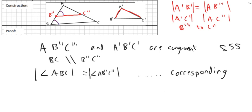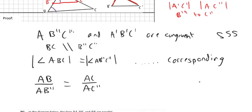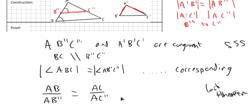So we can say that AB over AB'' is equal to AC over AC''. That's because the two lines are parallel — it's the theorem you've done before, the last theorem. Have a look back at that. You've proven that already, so therefore we can come up with this statement.